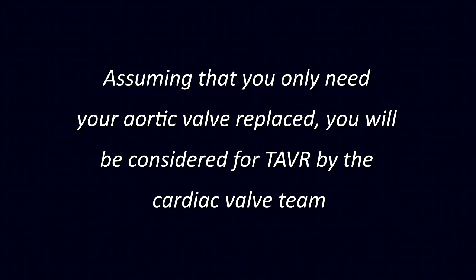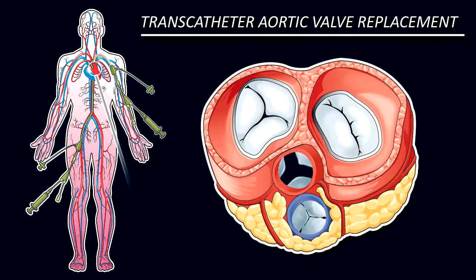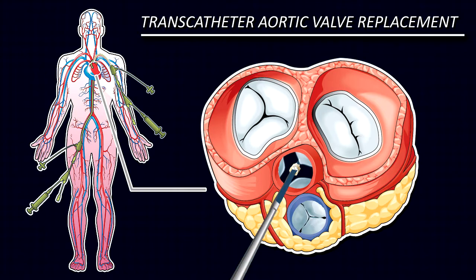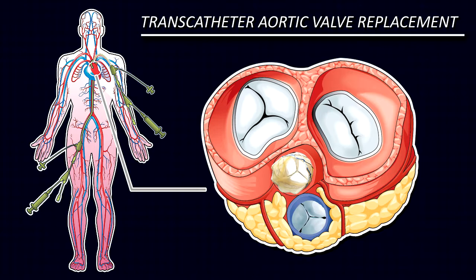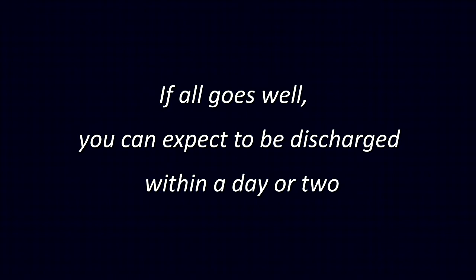Assuming you only need your aortic valve replaced, you will be considered for TAVR by the cardiac valve team. You will be admitted to the hospital and a team of experts will pass catheters from your leg or arm into your heart, placing a biological aortic valve within your diseased and stenotic aortic valve, utilizing a pressure balloon to open it up, then removing the balloon and catheters. You will be left with a biological TAVR aortic valve for the rest of your life, and if all goes well you can expect to be discharged within a day or two.